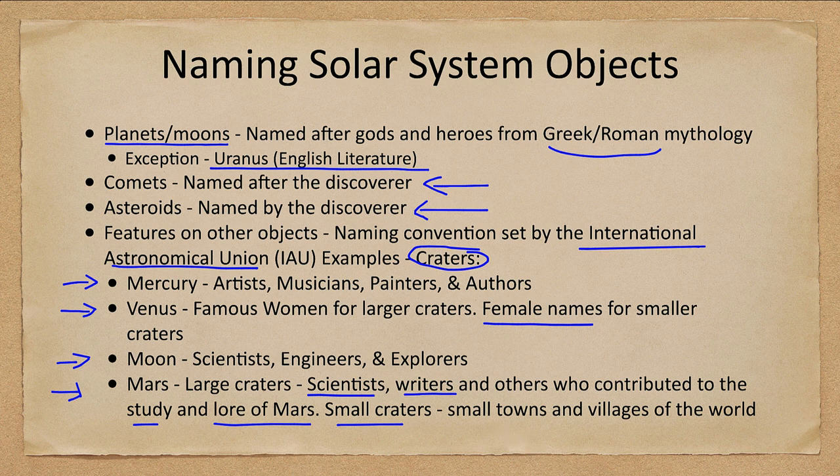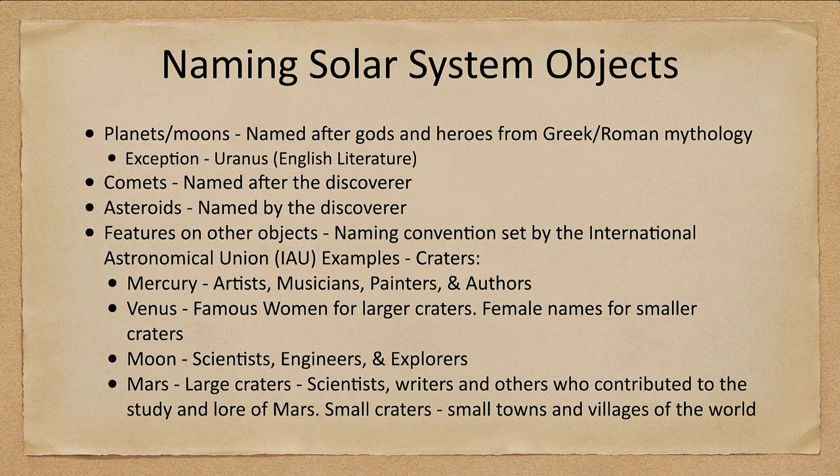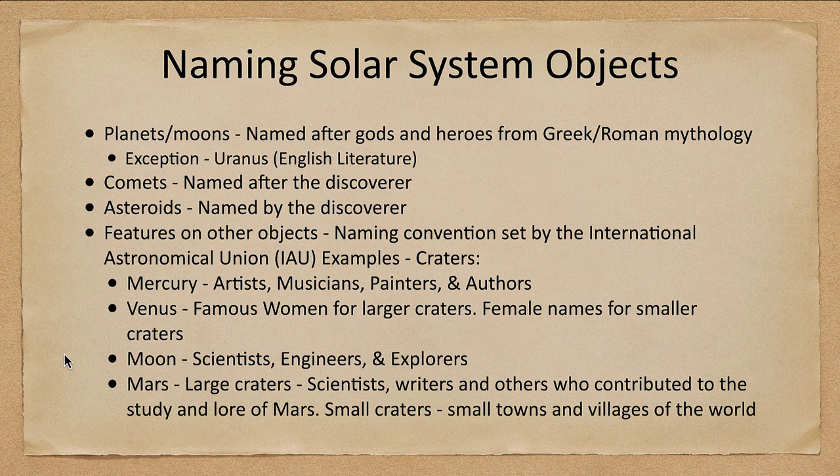So depending on which object you're looking at, they get their names through different sources and they are again approved by the International Astronomical Union. Sometimes you'll have common names that people refer to things by, but the official names are set in this way.